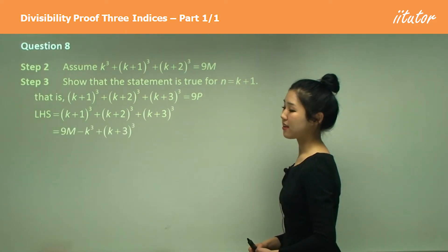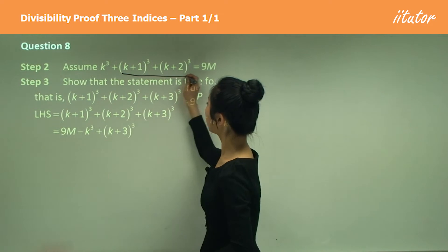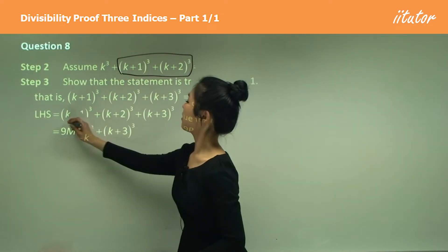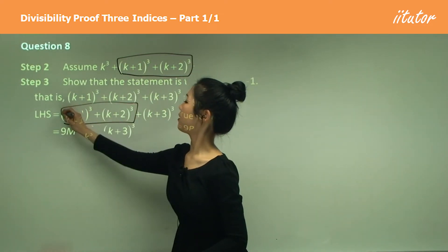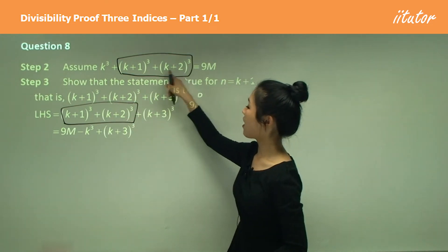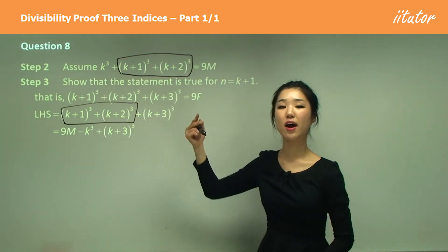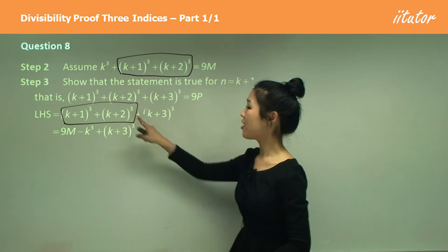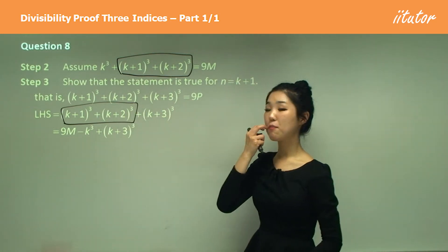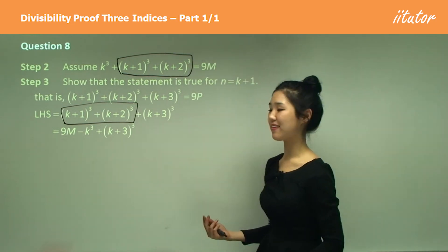So what I'm doing next is this. And you can see that this part here is this part here, which is our assumption, which is part of the assumption, isn't it? So to get that part, I can move k cubed over to this side, making it 9m minus k cubed, right? So this is 9m minus k cubed, which I put over here. That's how I utilize the assumption.